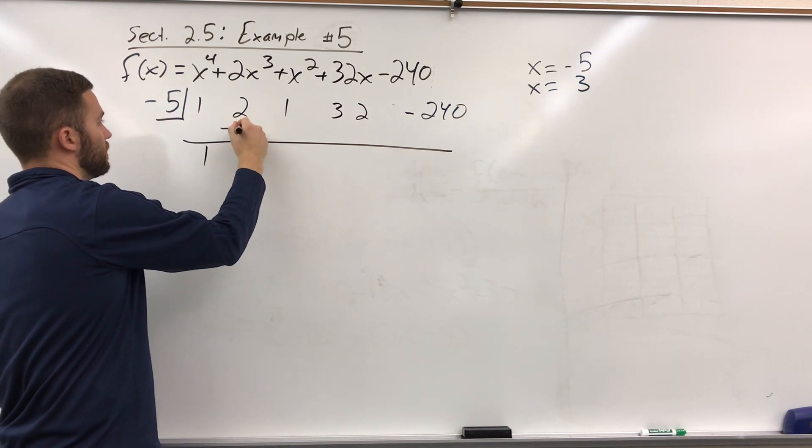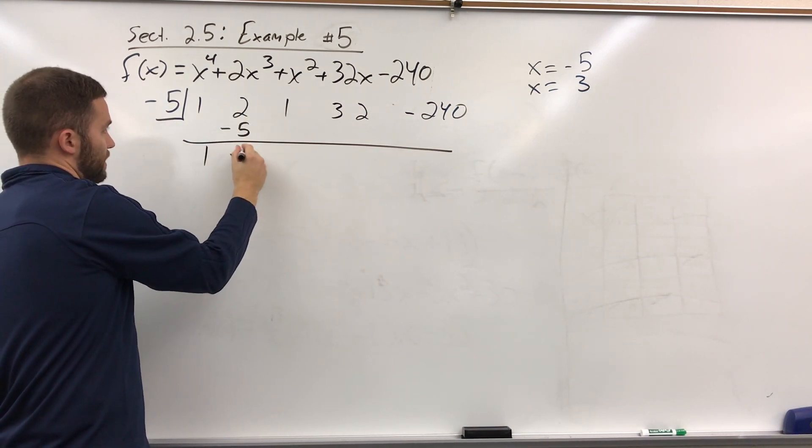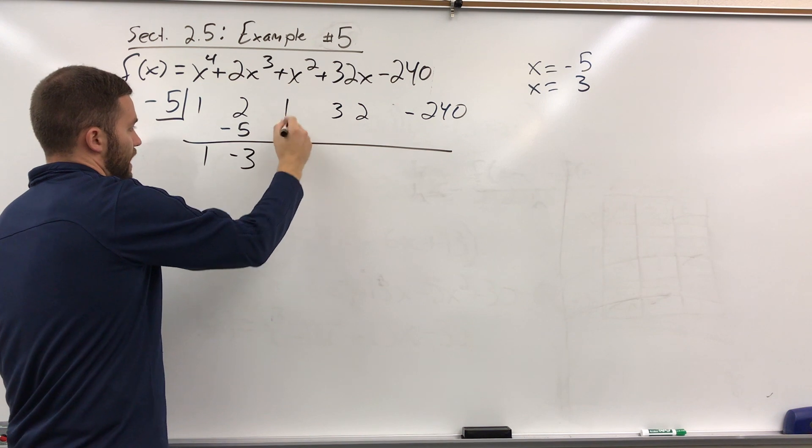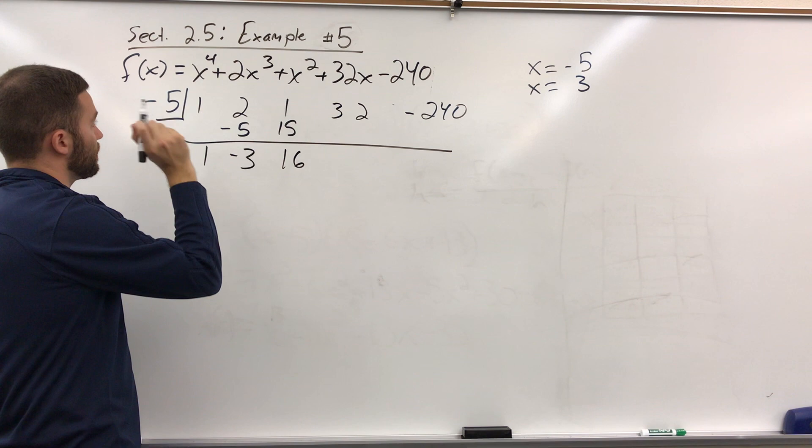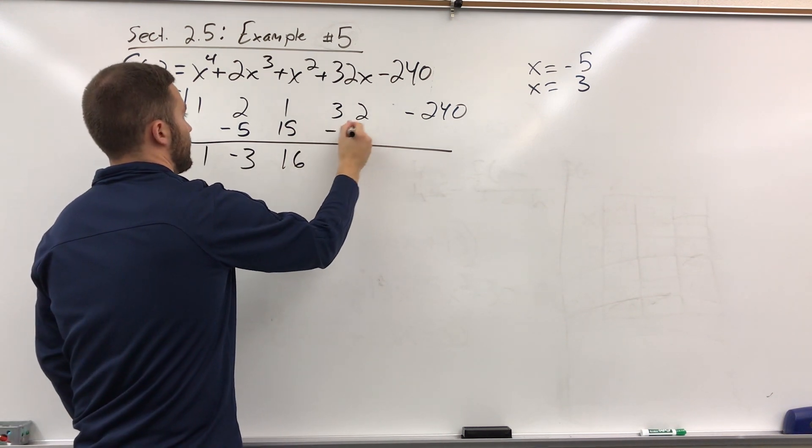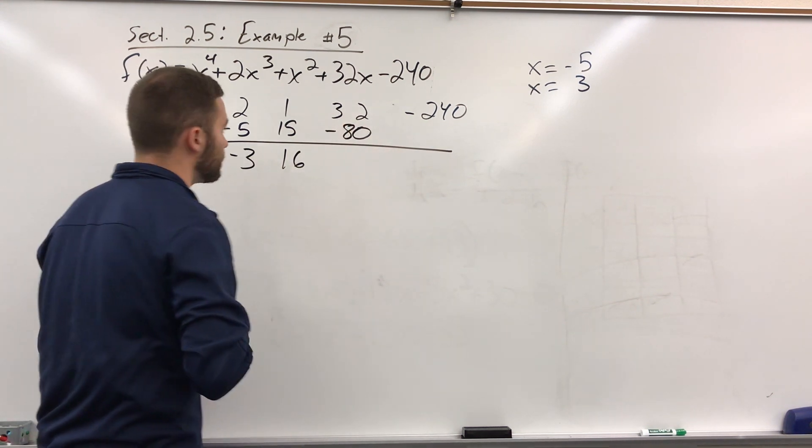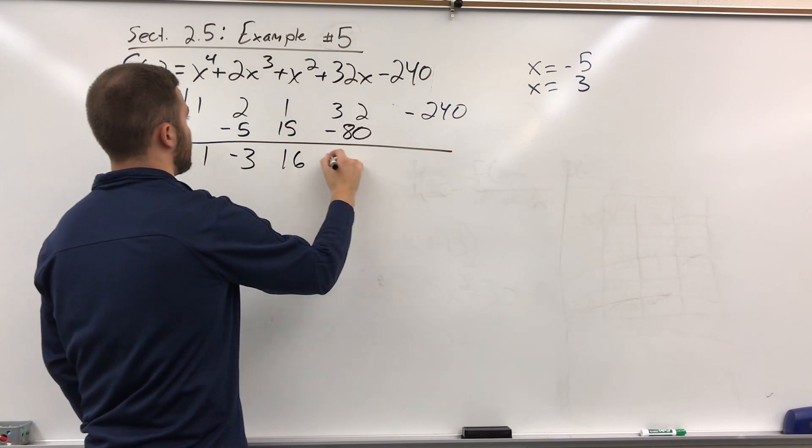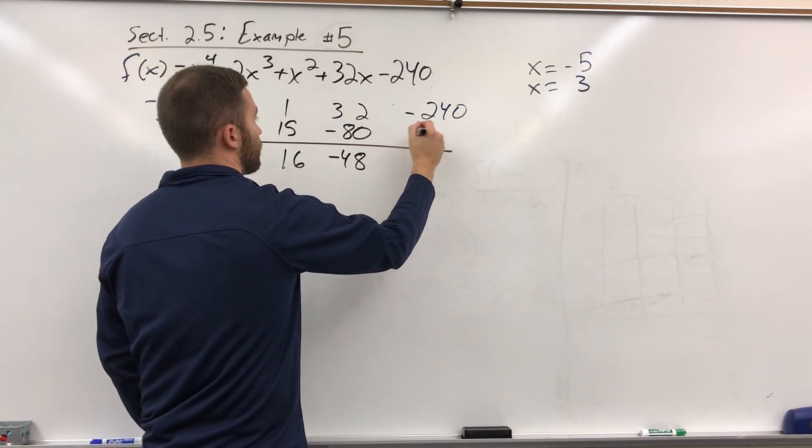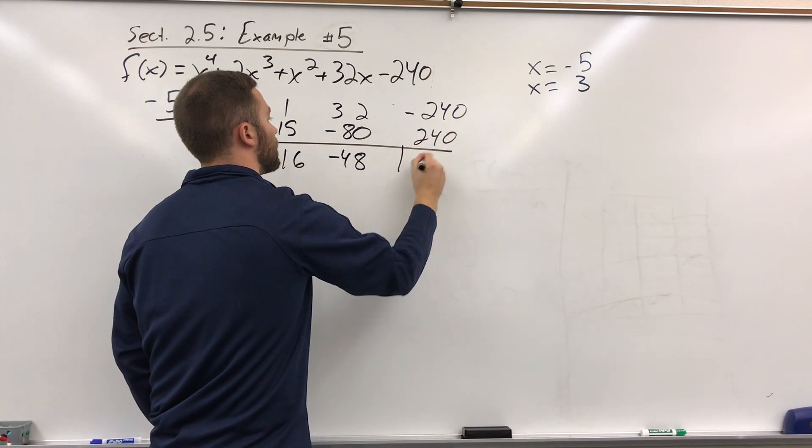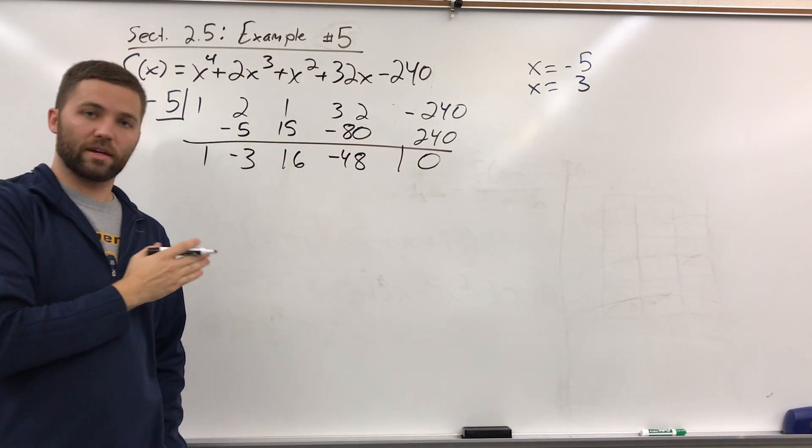Bring down the 1, negative 5, add them up, that's negative 3, multiply, that's 15, add them up, that's 16. Multiply here, so that's 50 plus 30, so 80, so negative 80. And that's negative 48, multiply these out, and you get positive 240, add them up, you get 0. You should get a remainder of 0 at this point.